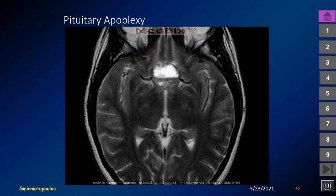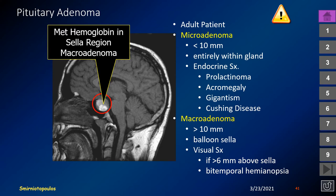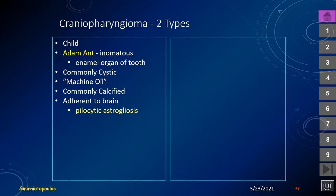Pituitary apoplexy can produce dramatic changes on imaging, including the formation of a blood-fluid level with the dependent area representing blood products. To summarize, pituitary adenomas are divided into microadenomas and macroadenomas. Microadenomas present with endocrine symptomatology, and macroadenomas typically present because of mass effect.